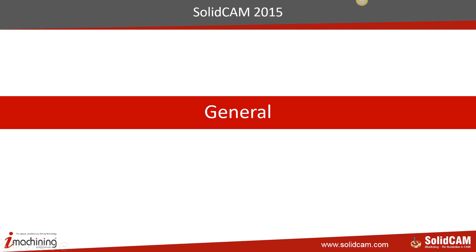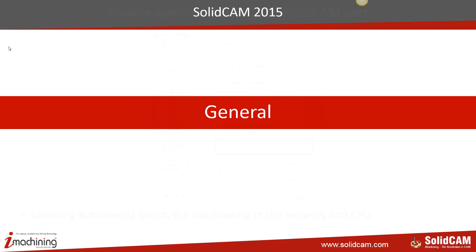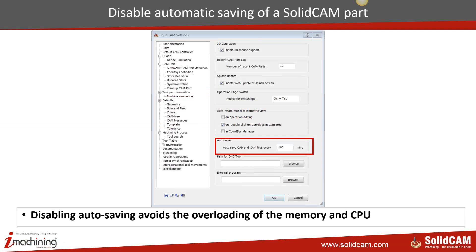The first settings we'll look at are general settings — ones you need to do before you start SolidCAM. These are only relevant if you're working with a big mold or a large part with hundreds of thousands of surfaces. If you have a small or medium part, these settings won't need to be touched because your existing settings work very well.